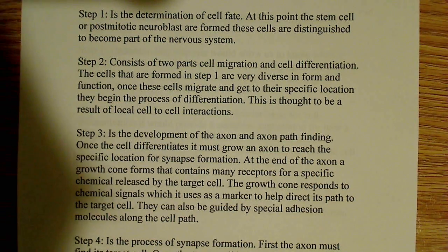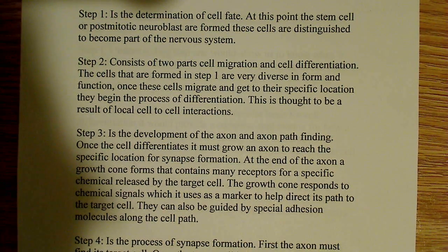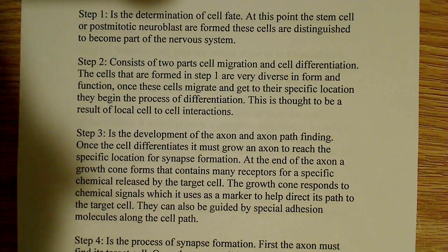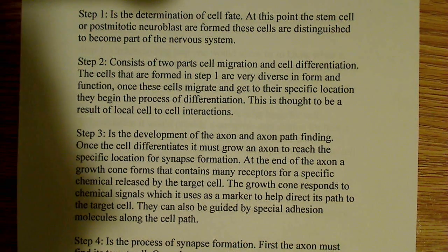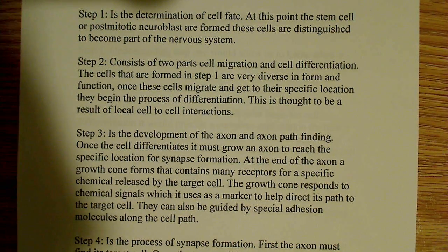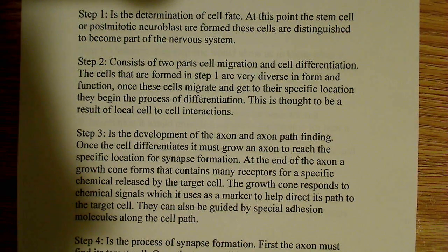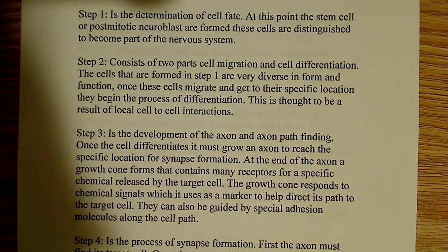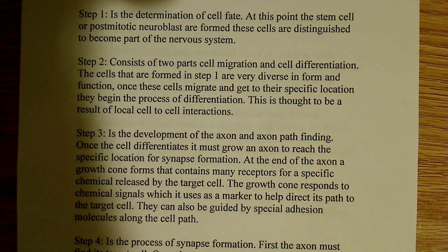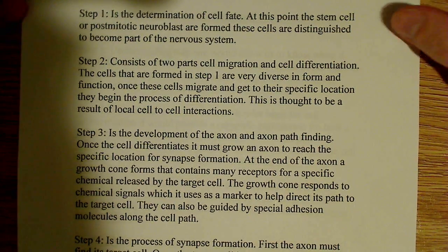Differentiation is thought to be the result of local cell-to-cell interactions. We have all kinds of interactions going on between cells — adhesions and various other cell-to-cell contacts. That cell-to-cell contact is often very specific: there are receptors involved, and these things only tend to respond to the proper stimulus or the proper interactions with another cell. So that's step two.